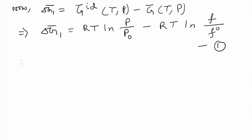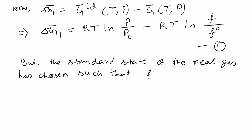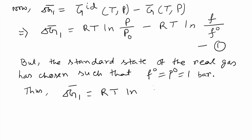The standard state of the real gas is chosen such that F0 equals P0, which equals 1 bar. Thus we can write the simplified form — this is equation 2 — and from there equation 1 is modified to RT ln(P/F).